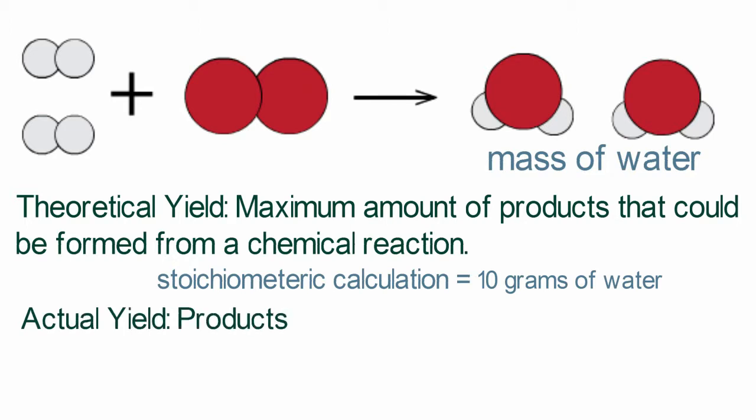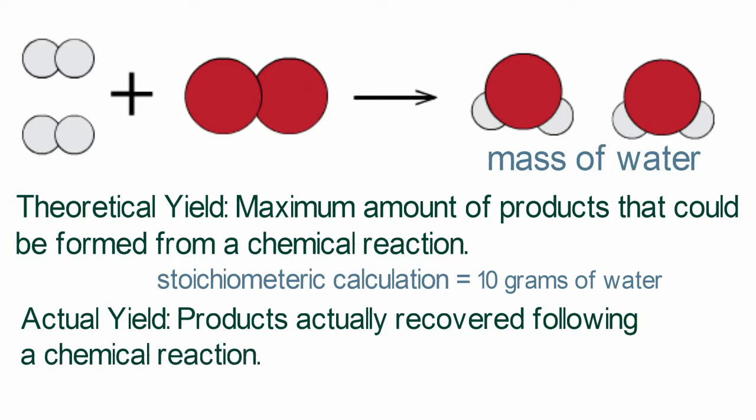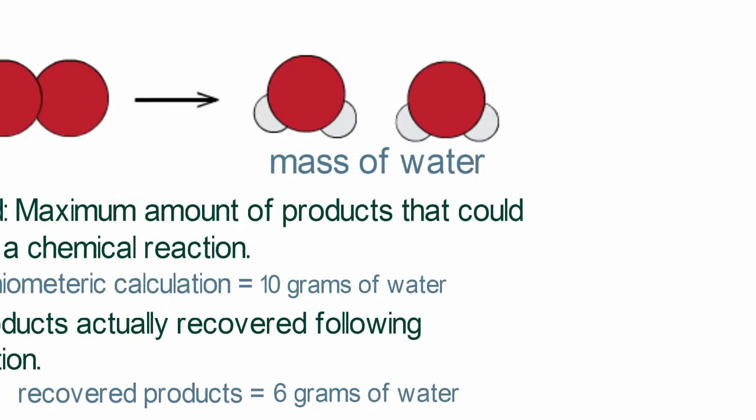The theoretical yield is the expected amount of products. The actual yield is the amount of products actually recovered following a chemical reaction. Chemists are often interested in the performance of a reaction as measured by the percent yield.